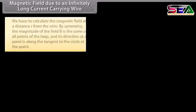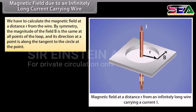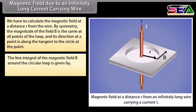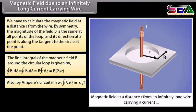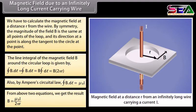Magnetic field due to an infinitely long current-carrying wire: We have to calculate the magnetic field at a distance r from the wire. By symmetry, the magnitude of field B is the same at all points of the loop, and its direction at any point is along the tangent to the circle. The line integral of B around the circular loop is B times 2 pi R. By Ampere's Circuital Law, this gives B equal to mu nought I divided by 2 pi R.